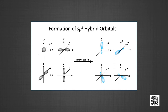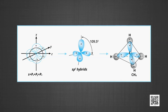In sp³ hybridization, as illustrated by methane (CH₄), one s orbital and three p orbitals of the valence shell mix to form four sp³ hybrid orbitals of equivalent energies and shapes. There is 25% s character and 75% p character in each sp³ hybrid orbital. The four sp³ hybrid orbitals are directed towards the four corners of a tetrahedron, with an angle of 109.5° between them. The figure shows the formation of sp³ hybrid orbitals by combination of s, px, py, and pz atomic orbitals of carbon and the resulting CH₄ molecule.